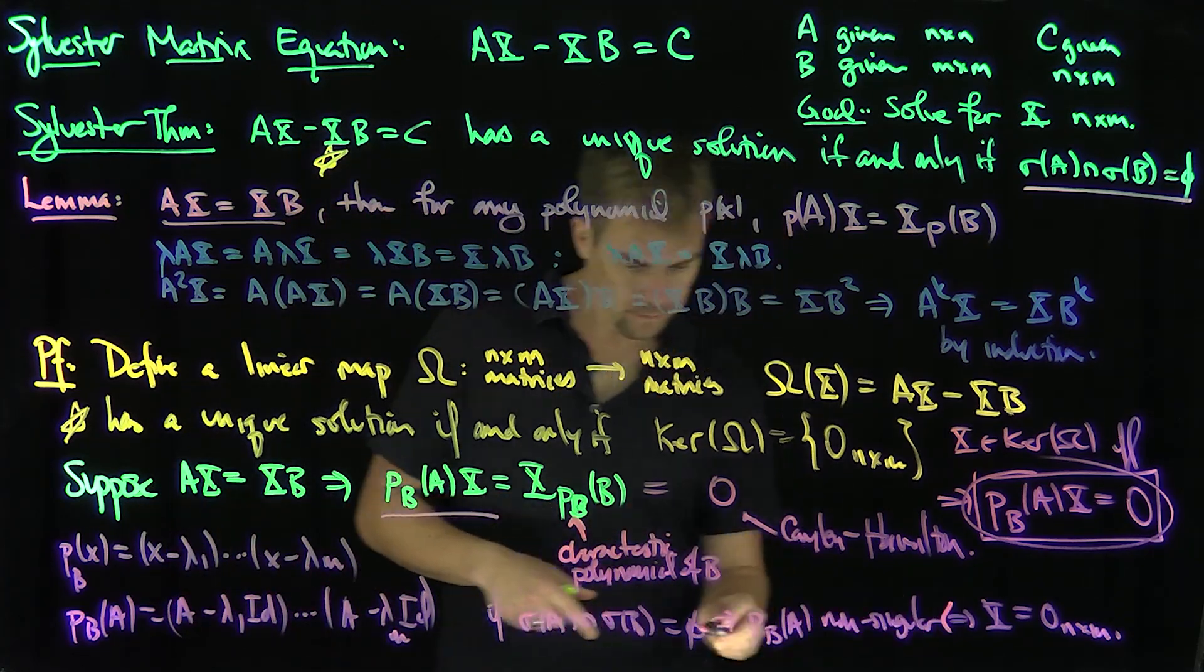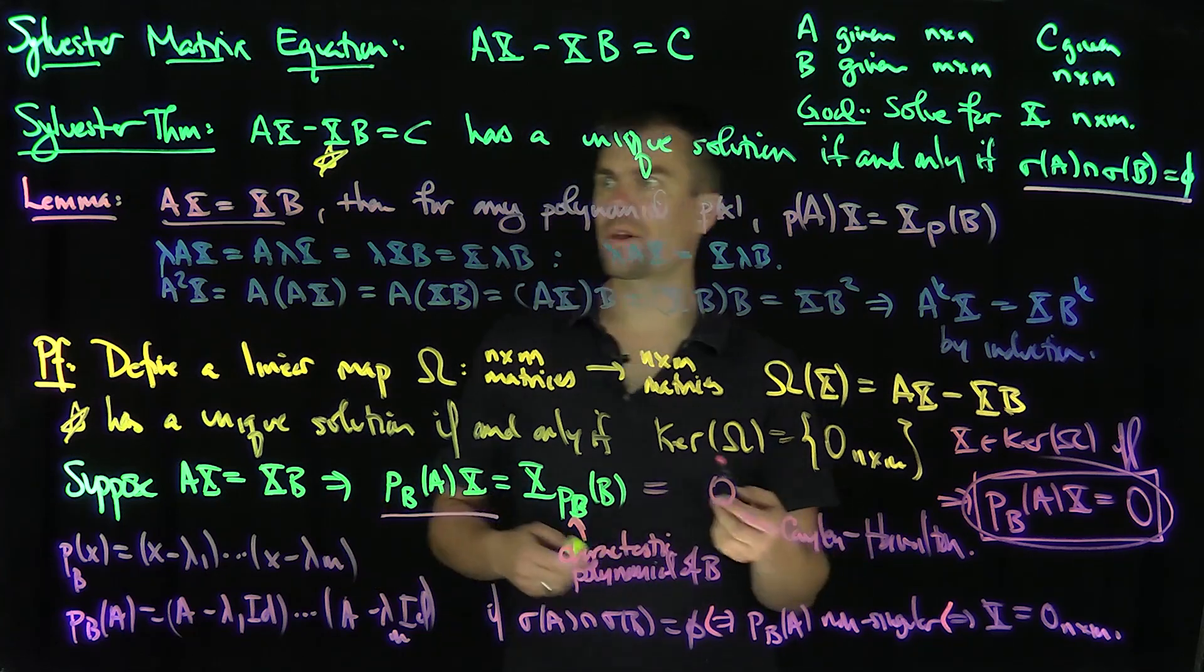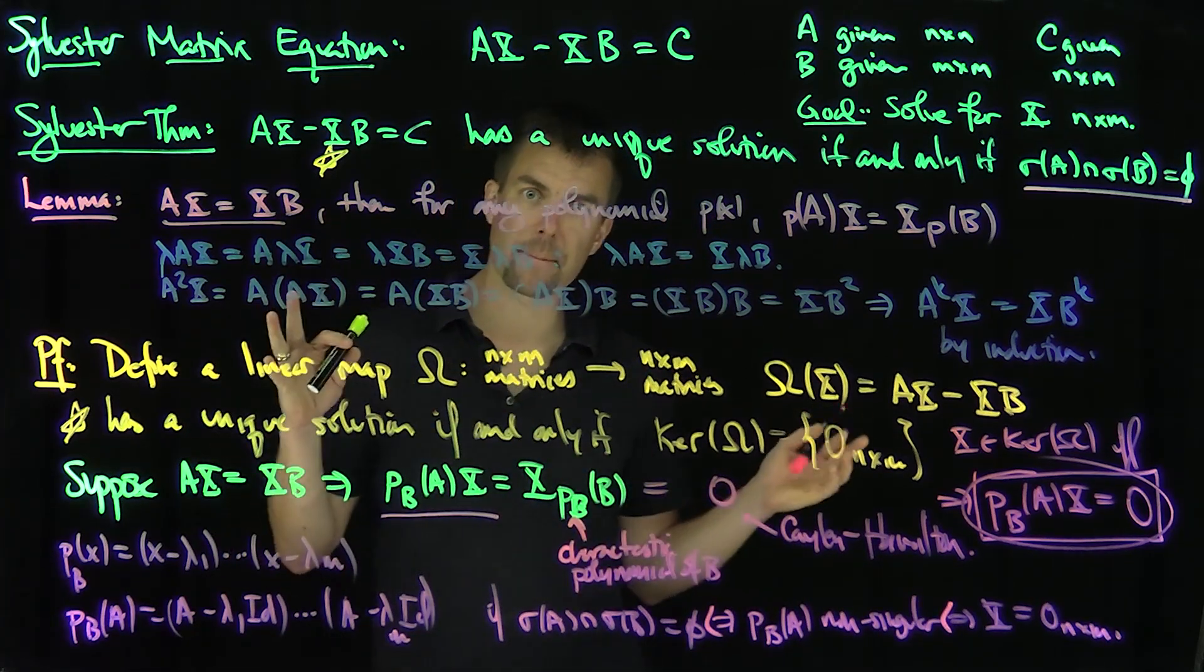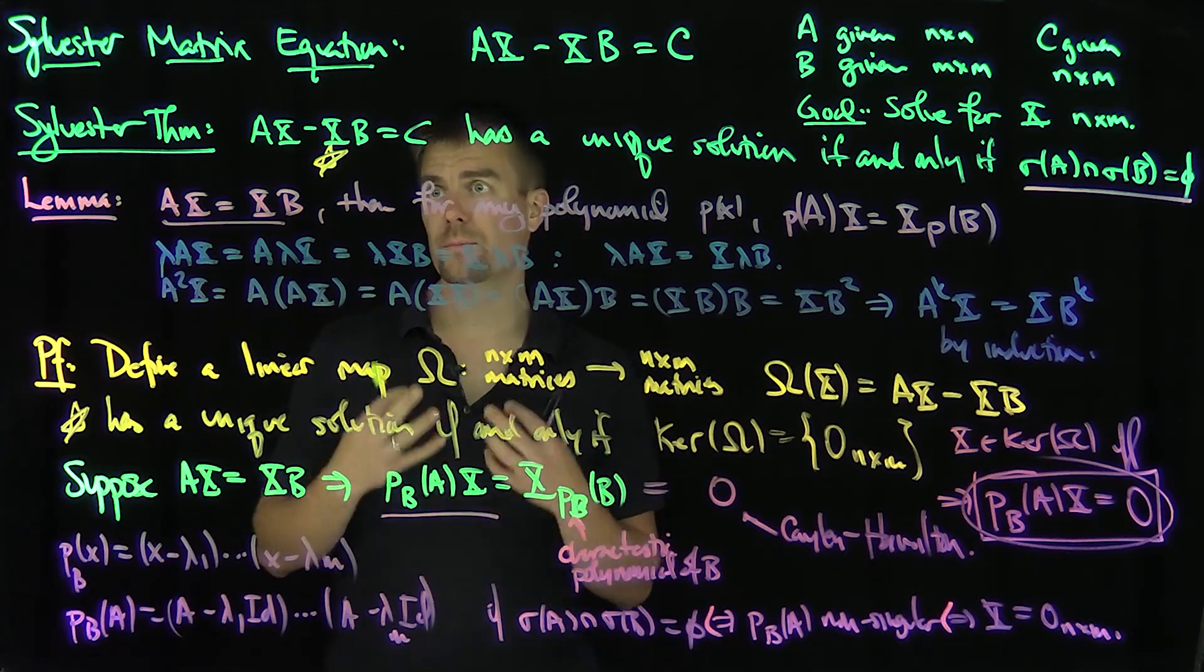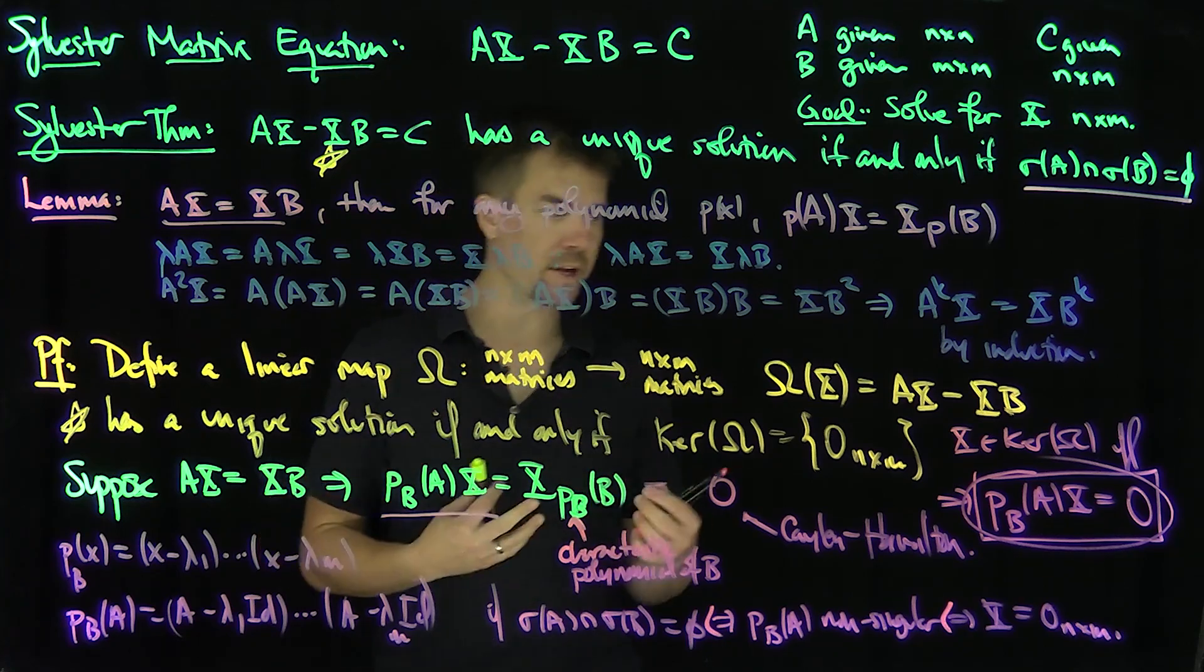In other words, this reasoning is reversible, and so we've just shown that this equation, AX minus XB equals C, for any C I pick, for any n by m matrix C, has a solution if and only if the spectrum of A is distinct from the spectrum of B.